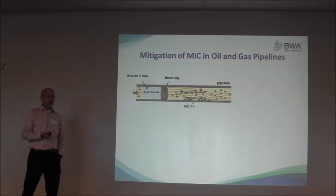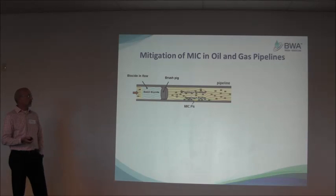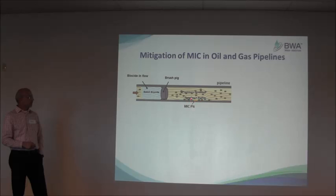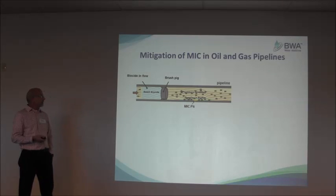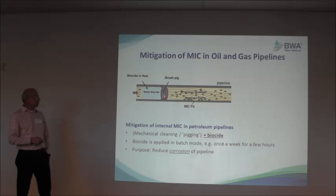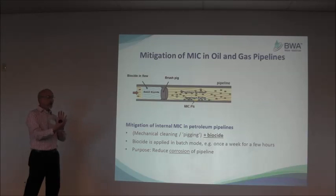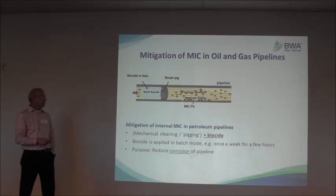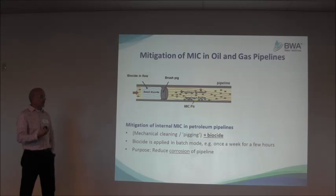How do you use biocides to mitigate corrosion in oil and gas pipelines? Here's a cartoon of a corrosive biofilm on the surface of a pipeline — you can see they're generating a pit. In oil and gas pipelines, it's common to pig and batch treat with a biocide. You mechanically clean with the pig, which removes some of the biofilm, then a high concentration of biocide put in behind the pig tries to control any remaining viable biofilm organisms. This is typically done once a week for a few hours.